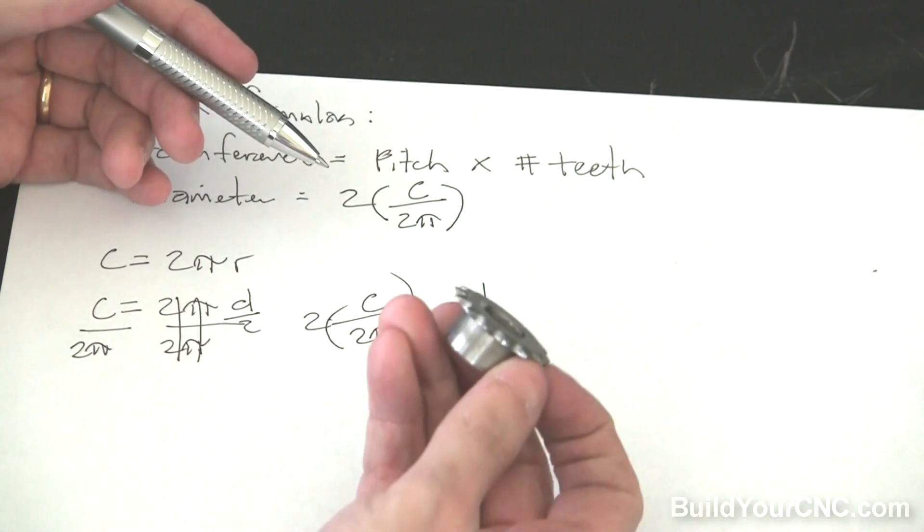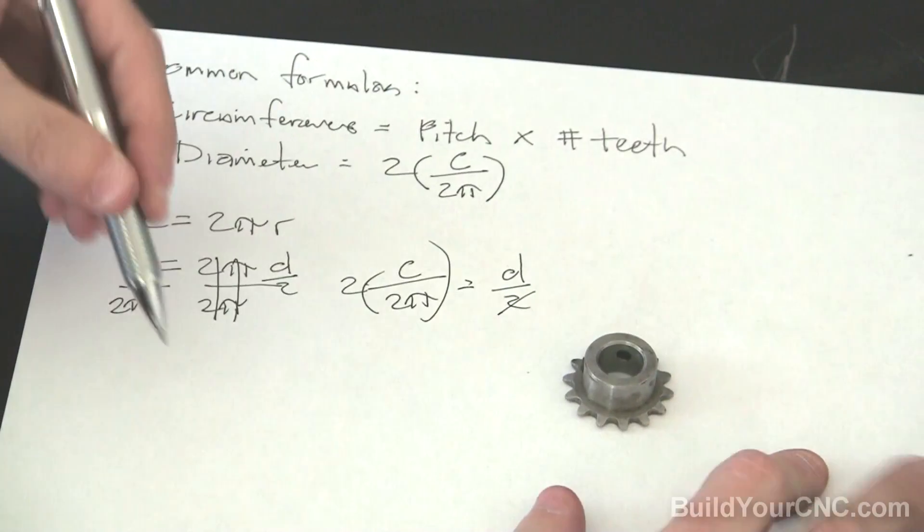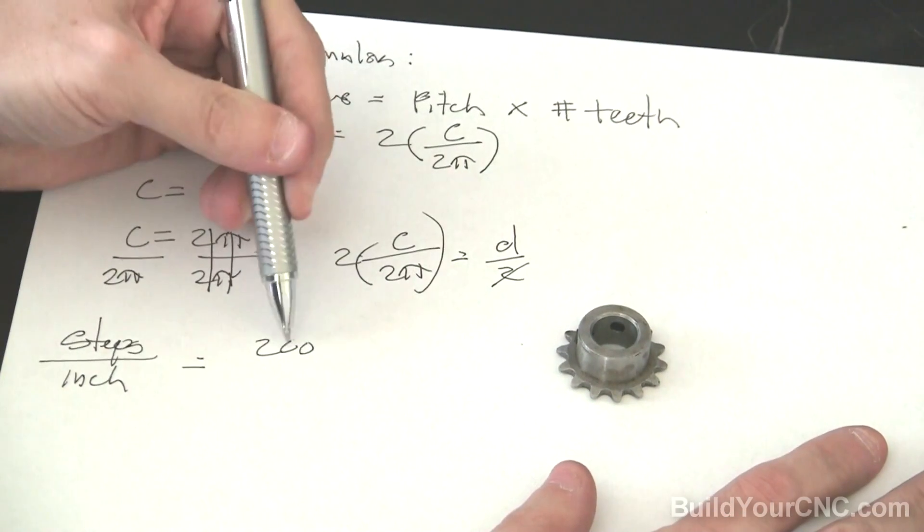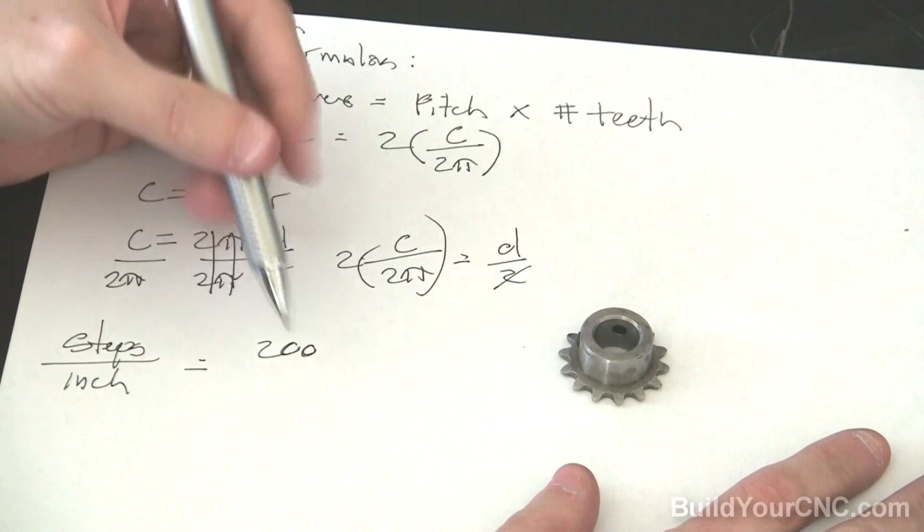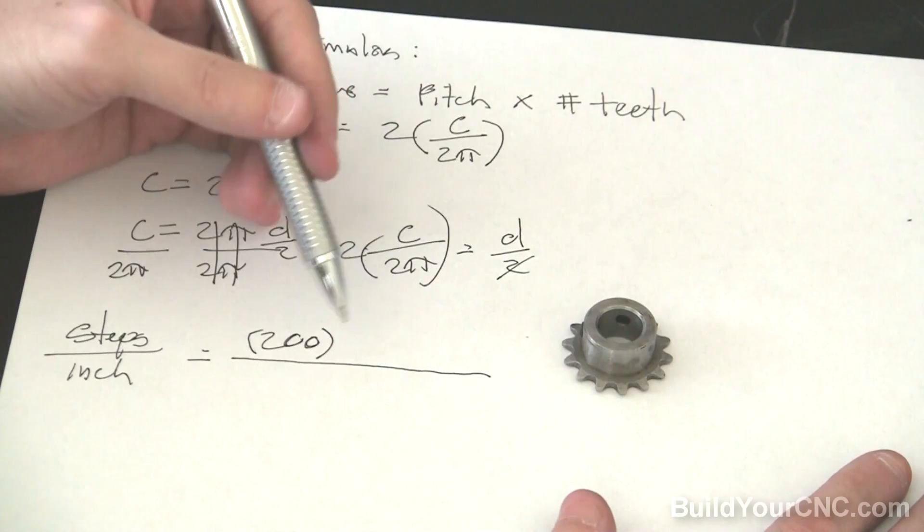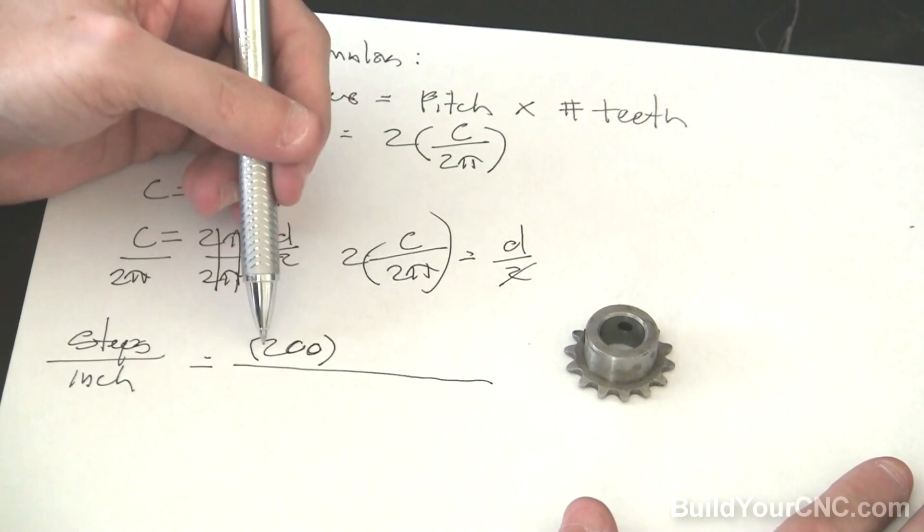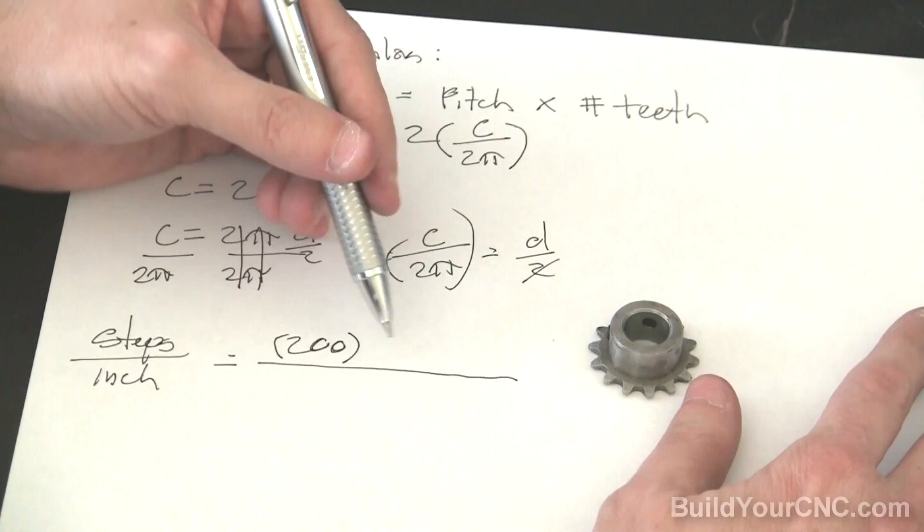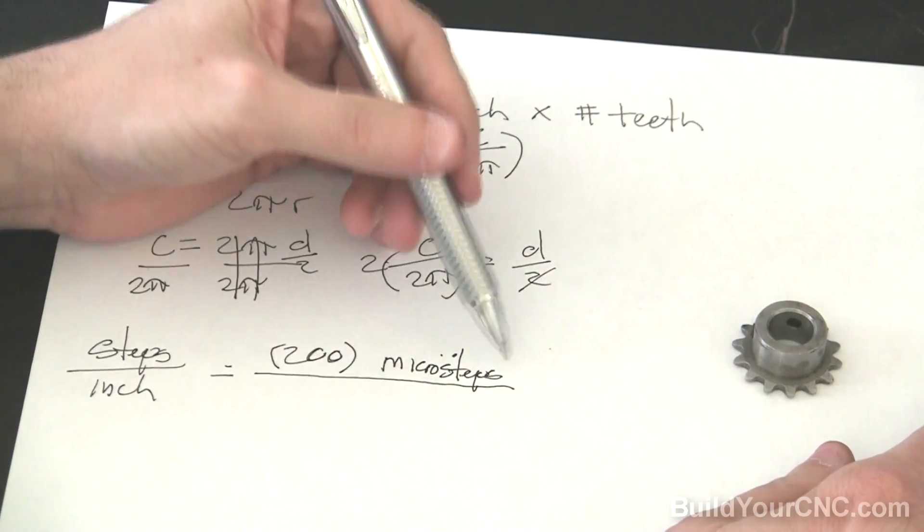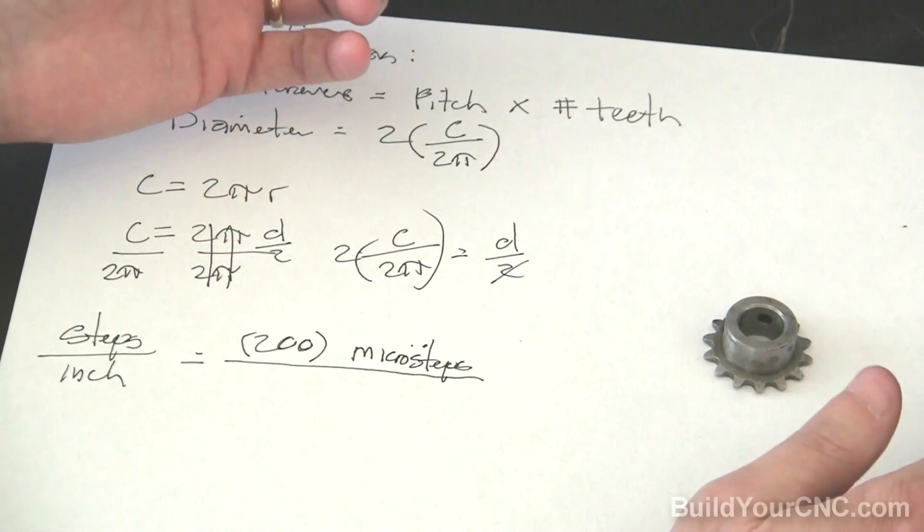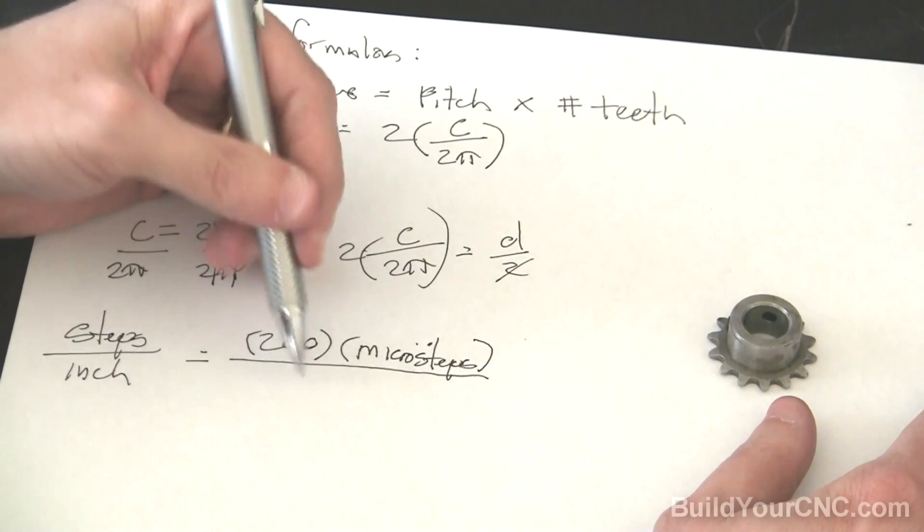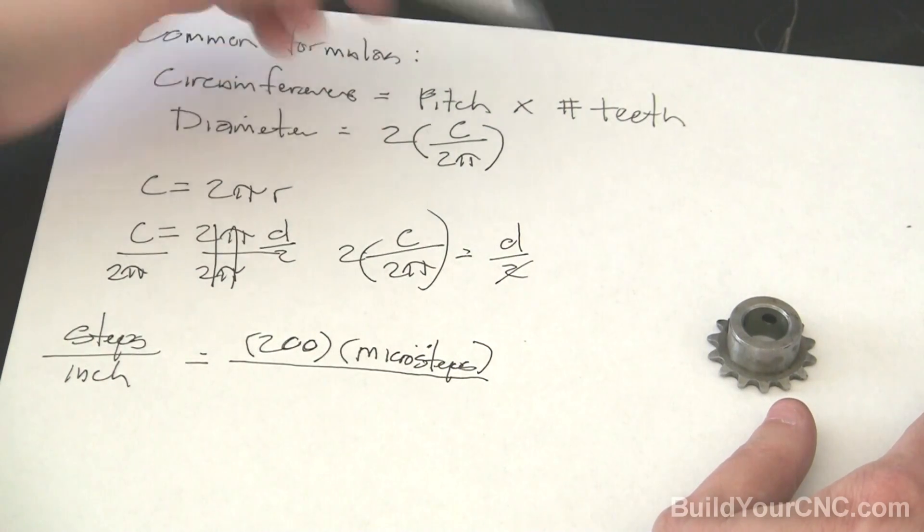If you're using sprockets with stepping motors, then we can find steps per inch. And this equals the number of steps per revolution for a stepping motor. This is generally 200. Typically, the stepping motors that are used in most of the industry is 200 steps per inch for DIY CNC machines and so forth. So multiply this by the microsteps. Not the division of microsteps, but like if it's 1/16th, this would be 16. And this would be over the circumference, which is the pitch times the teeth.